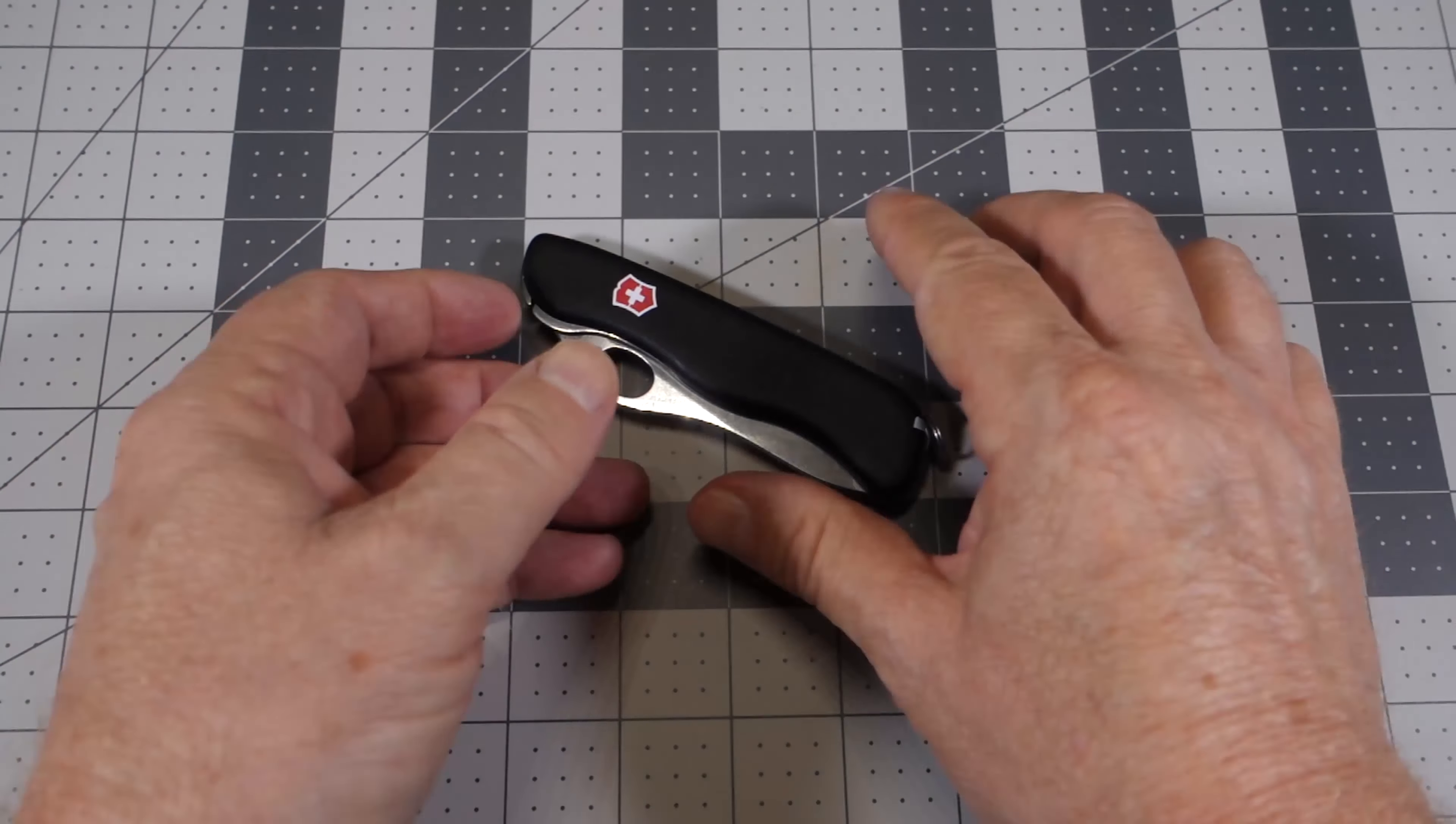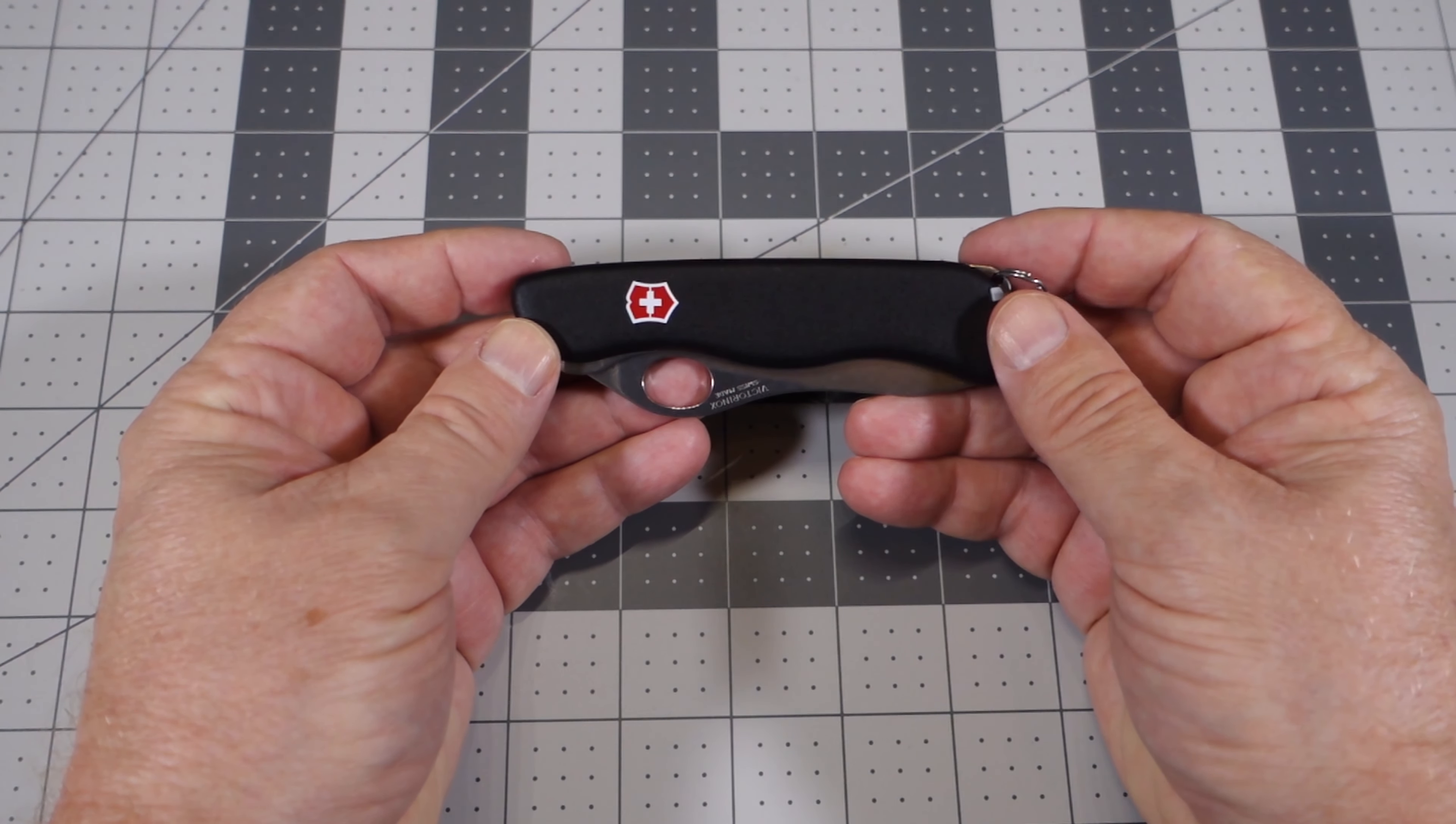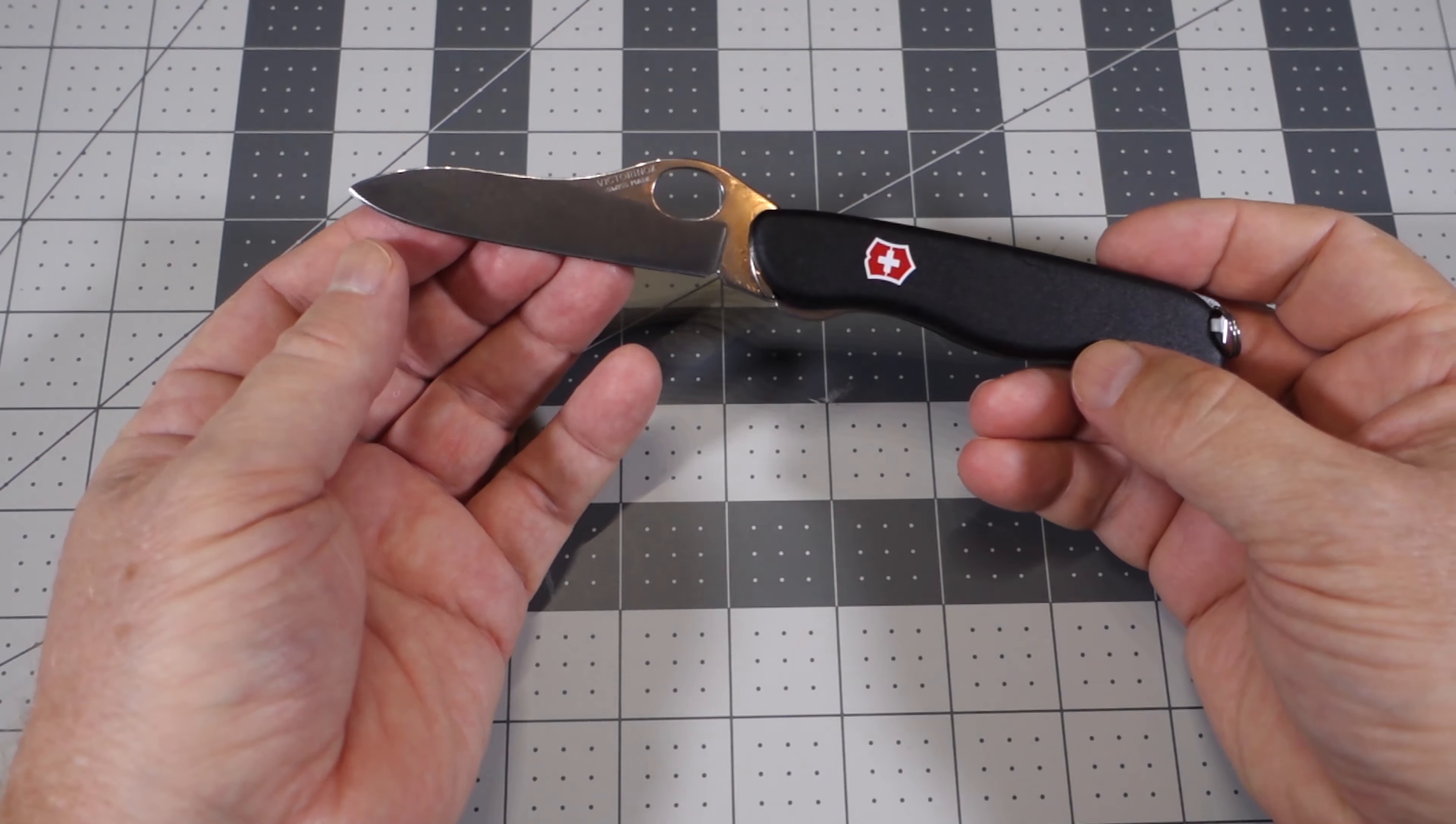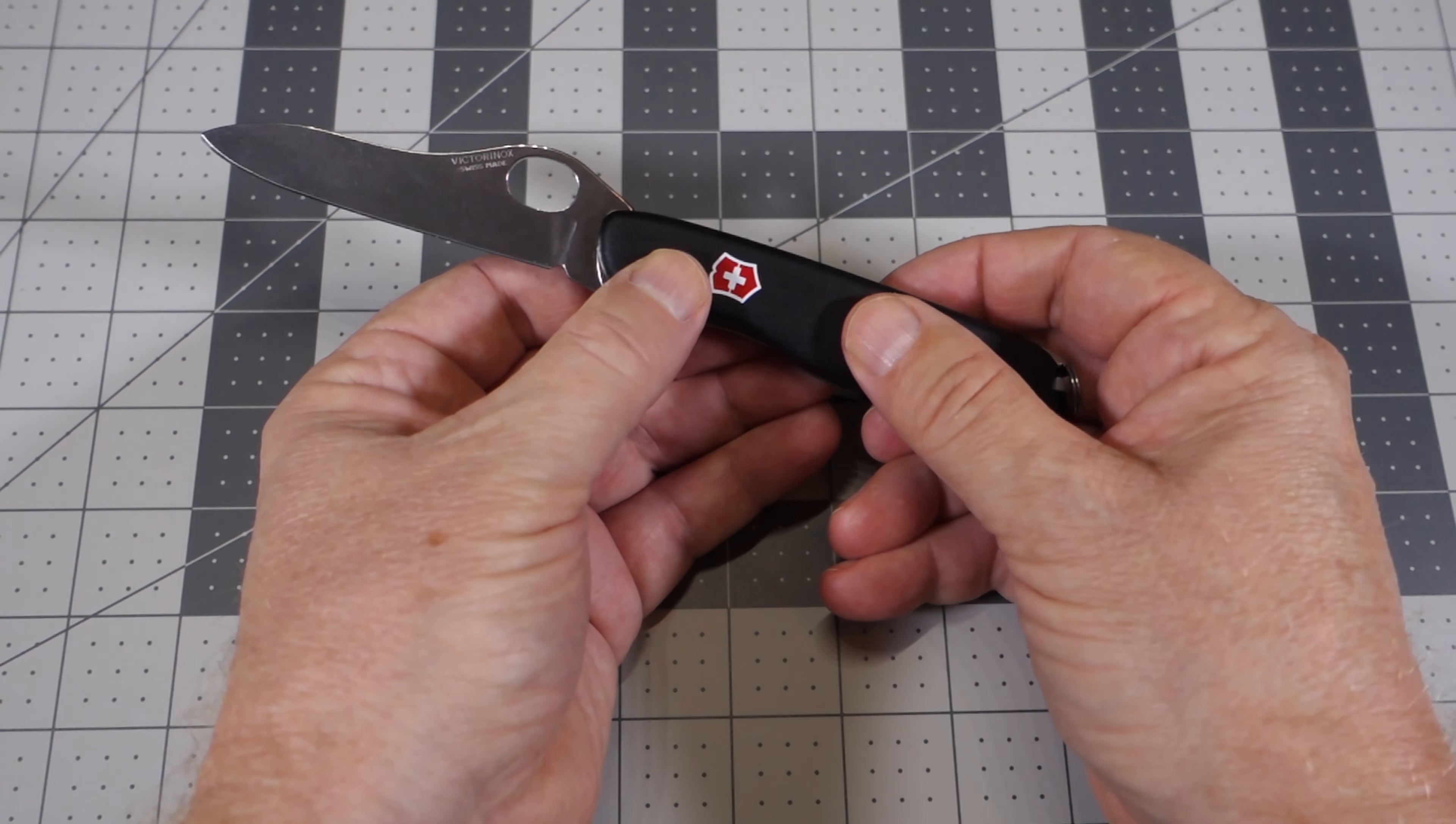So let's go over the specs real quick. This is an overall length of four and three-eighths inches. The blade length is three and three-eighths inches and it is made out of stainless steel. It is a flat grind and the handles are made out of plastic.